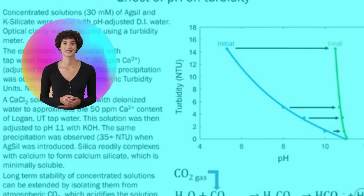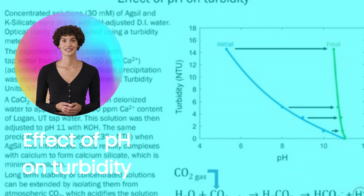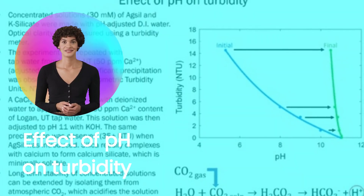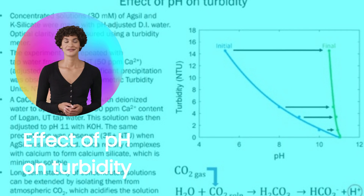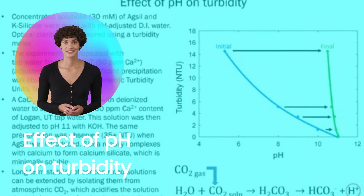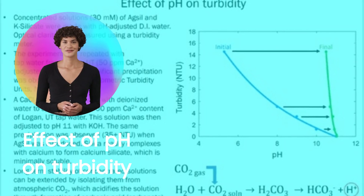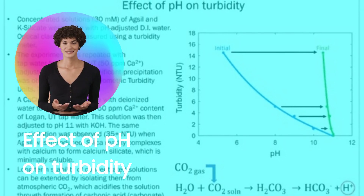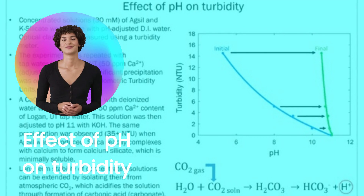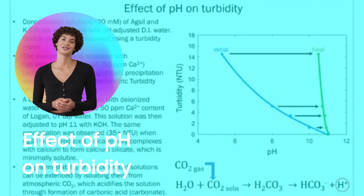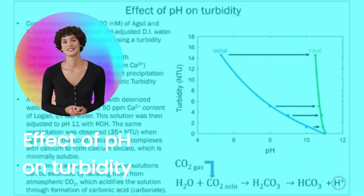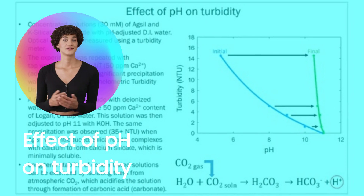Calcium and pH affect turbidity of potassium silicate solutions. Use deionized or very pure reverse osmosis filtered water, completely free of calcium, for concentrated stock solutions of potassium silicate.